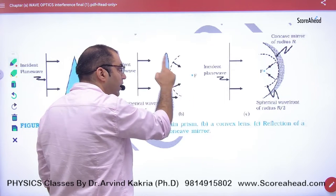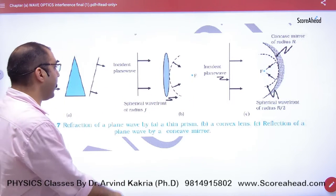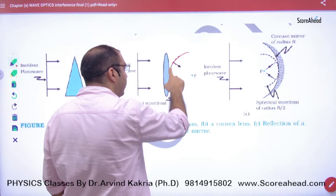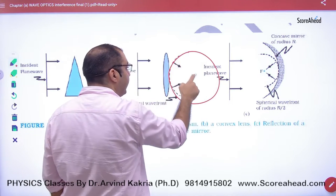The wavefront always makes 90 degrees with the rays. Everyone knows this. When the wavefront curves, the 90-degree angle - where will it pass through?